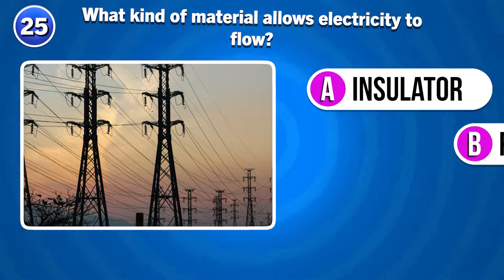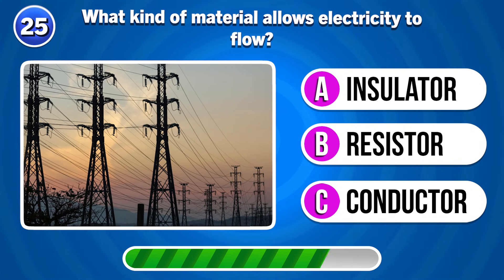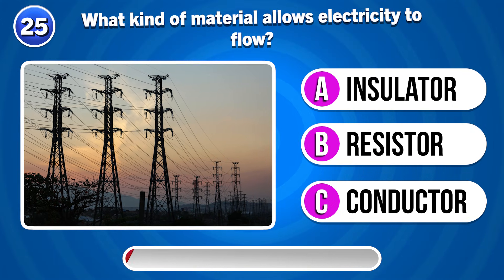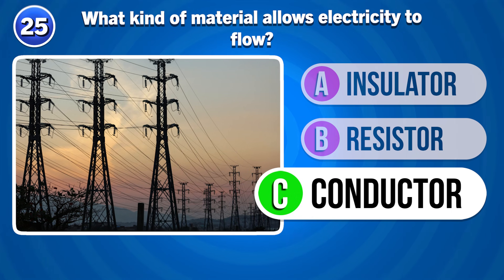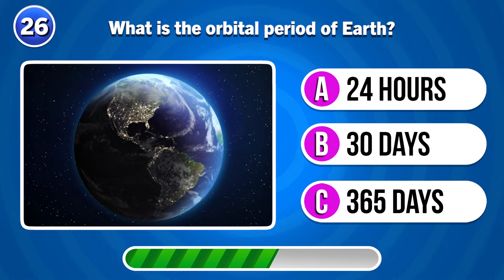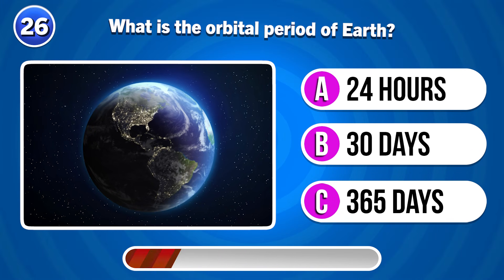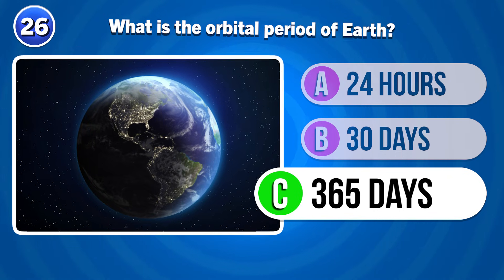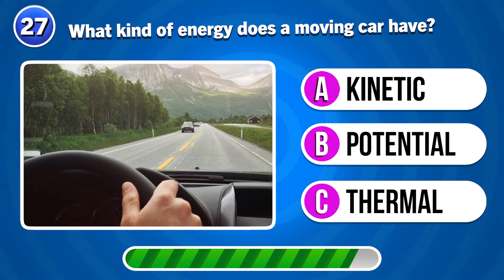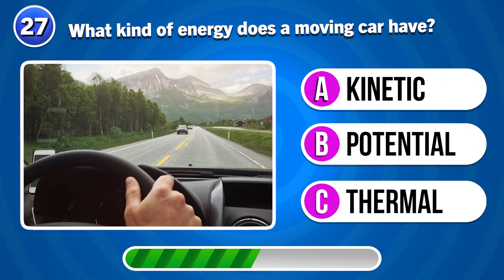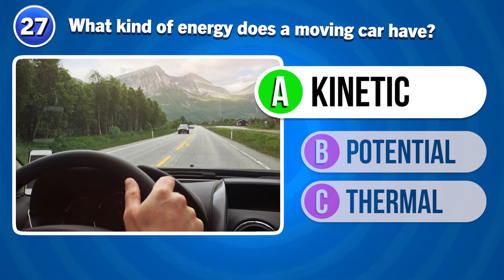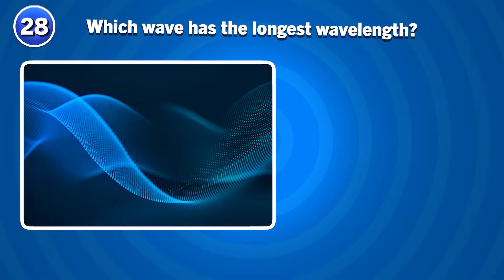What kind of material allows electricity to flow? Conductor. What is the orbital period of Earth? 365 days. What kind of energy does a moving car have? Kinetic energy.